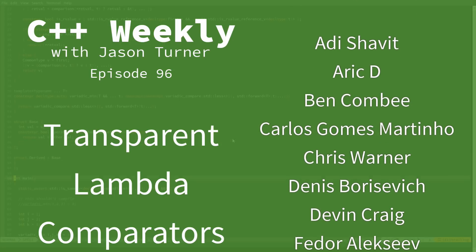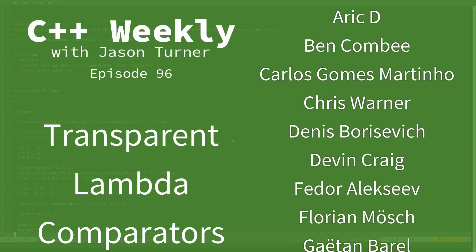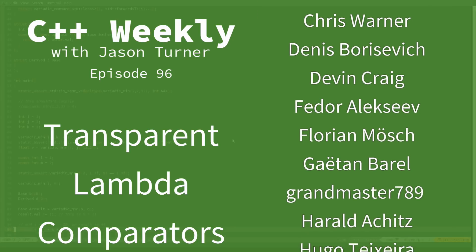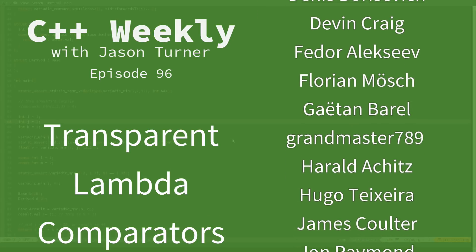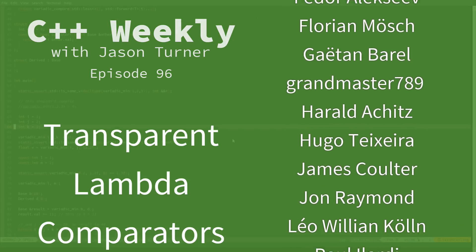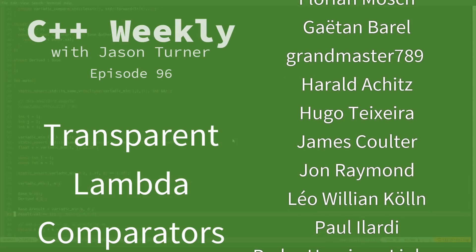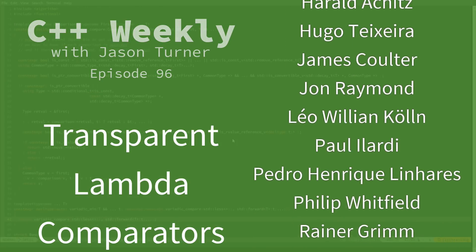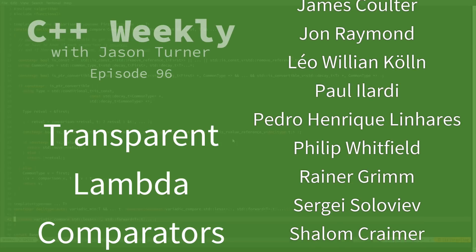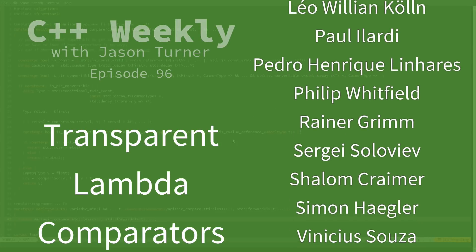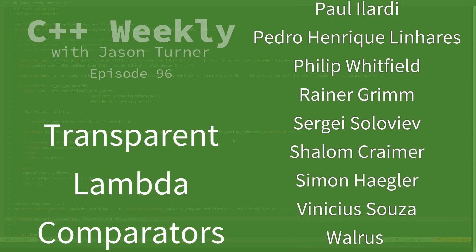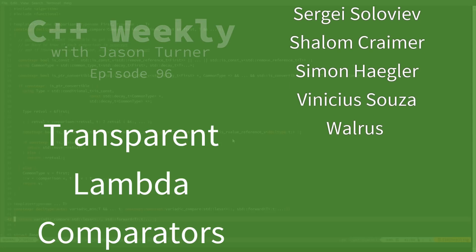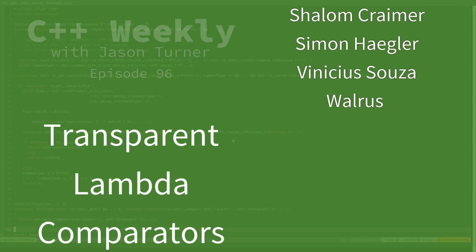But I got some pushback from a few people saying you can just create a handy helper function to use the lambda as a comparator for you. So I'll go ahead and demonstrate that now, but I'm going to take it a step further and combine everything we've talked about with lambdas and comparators in the last several episodes into one episode here.